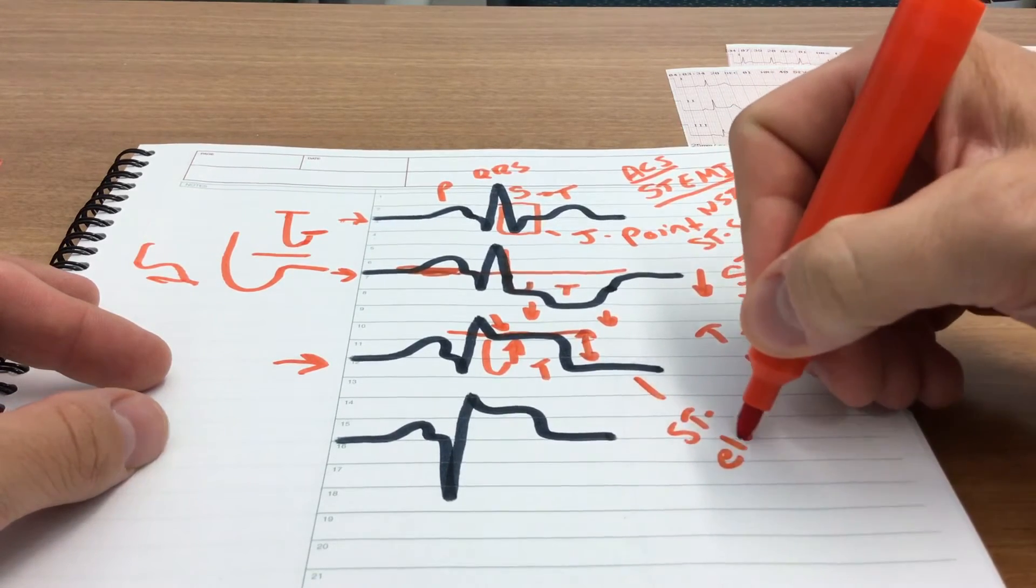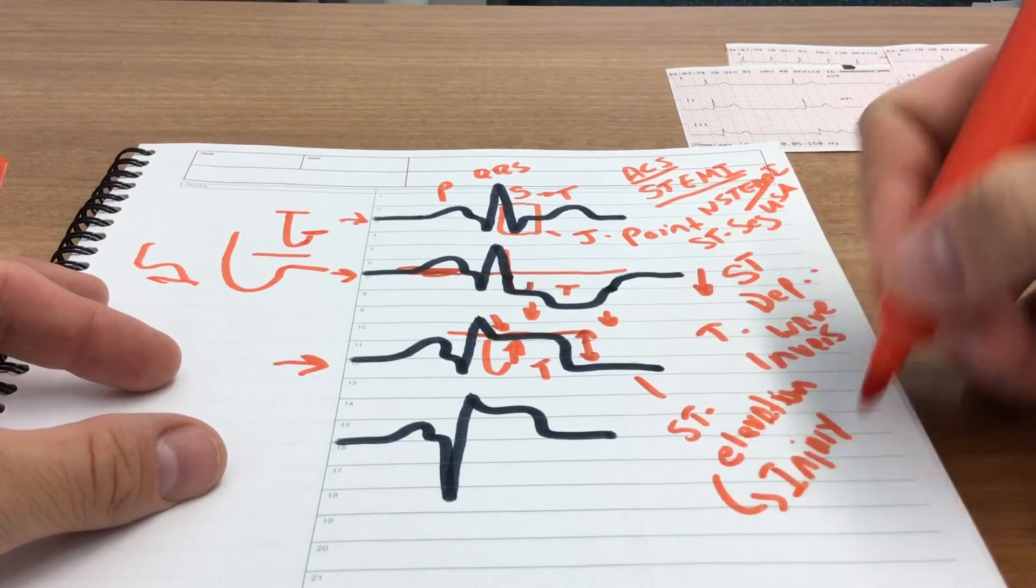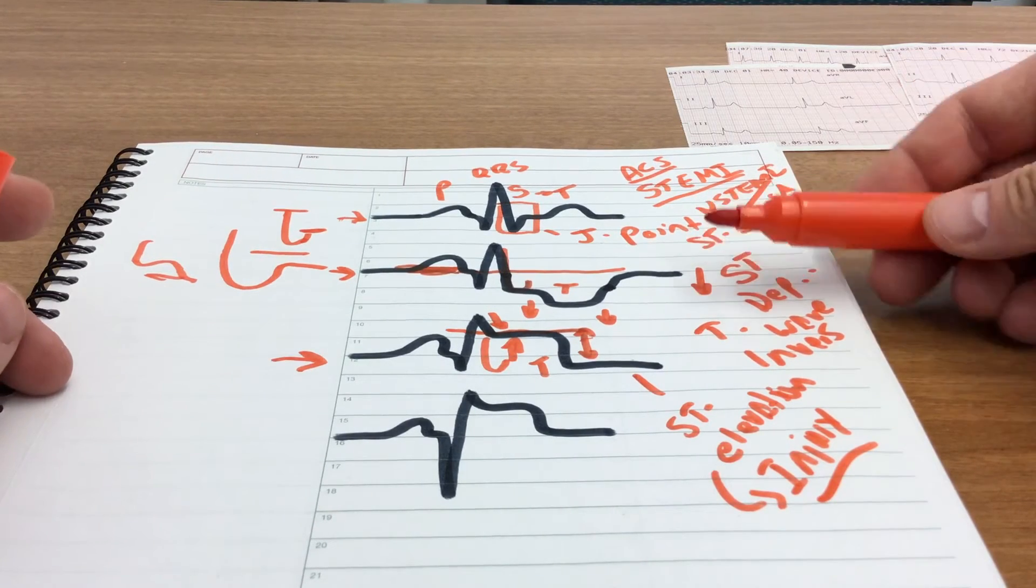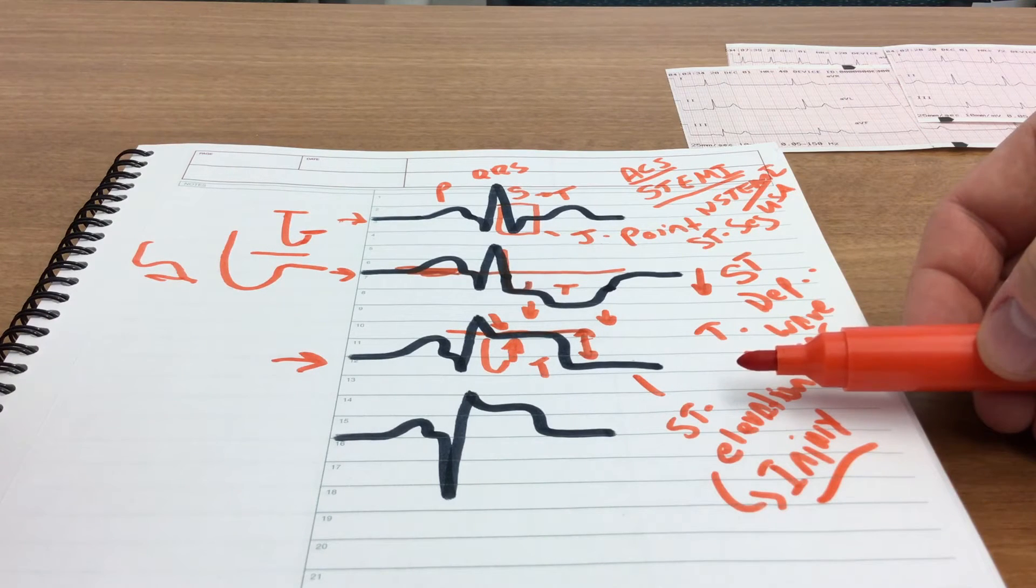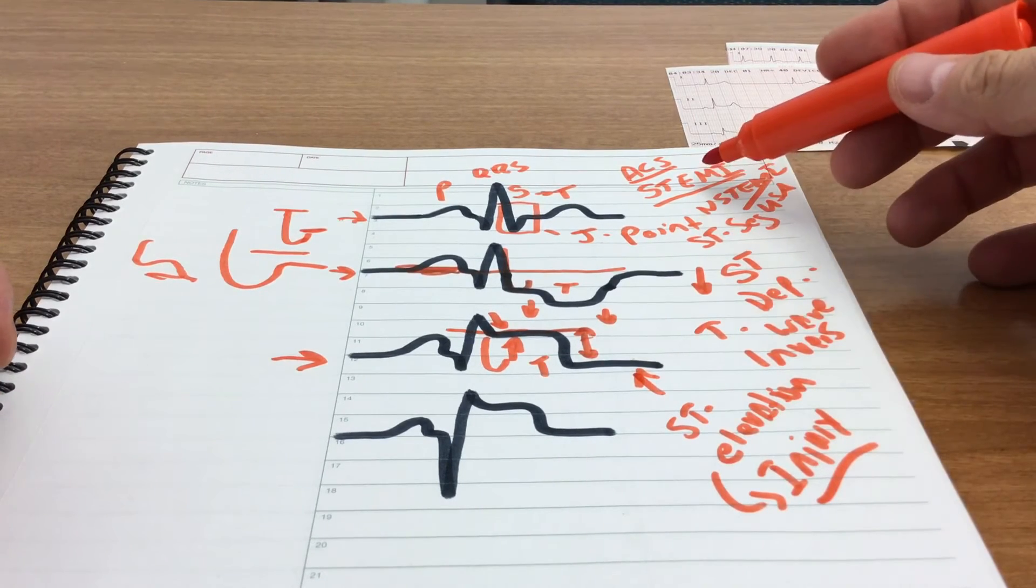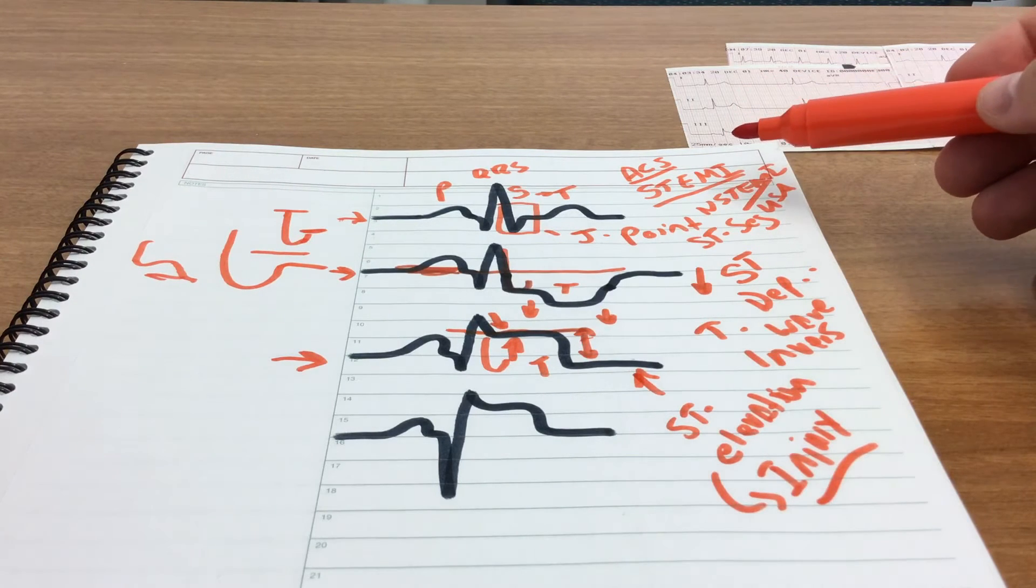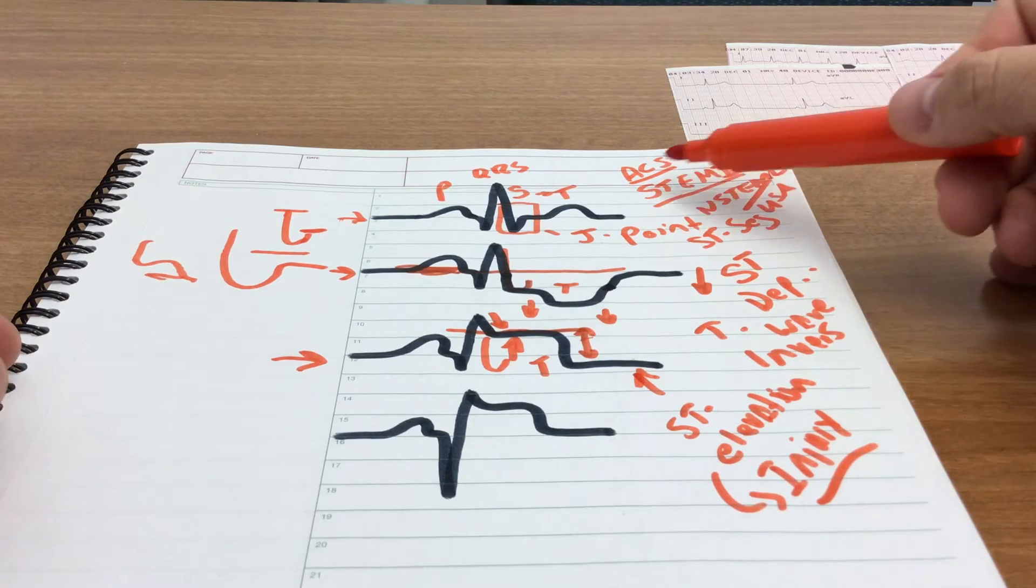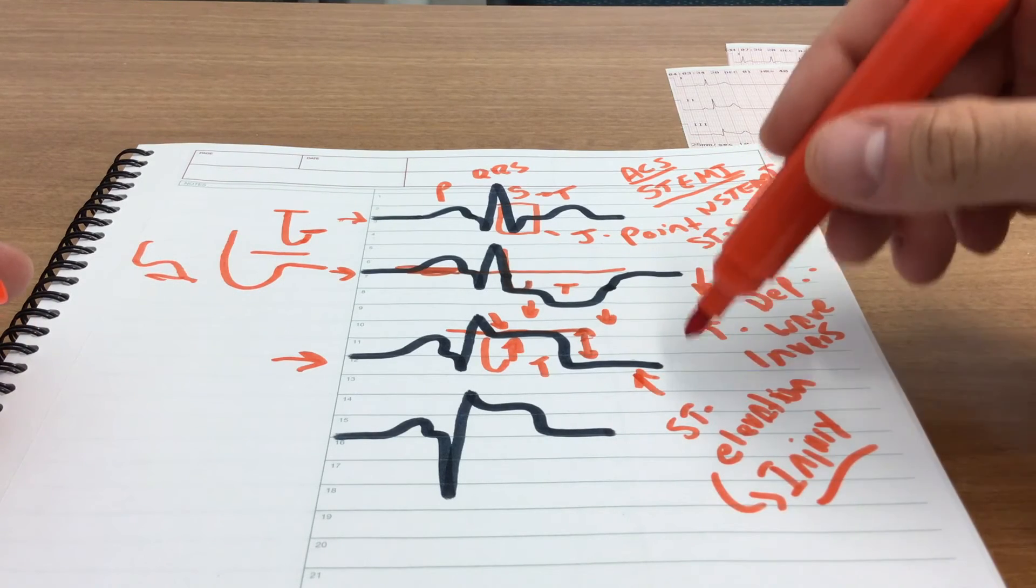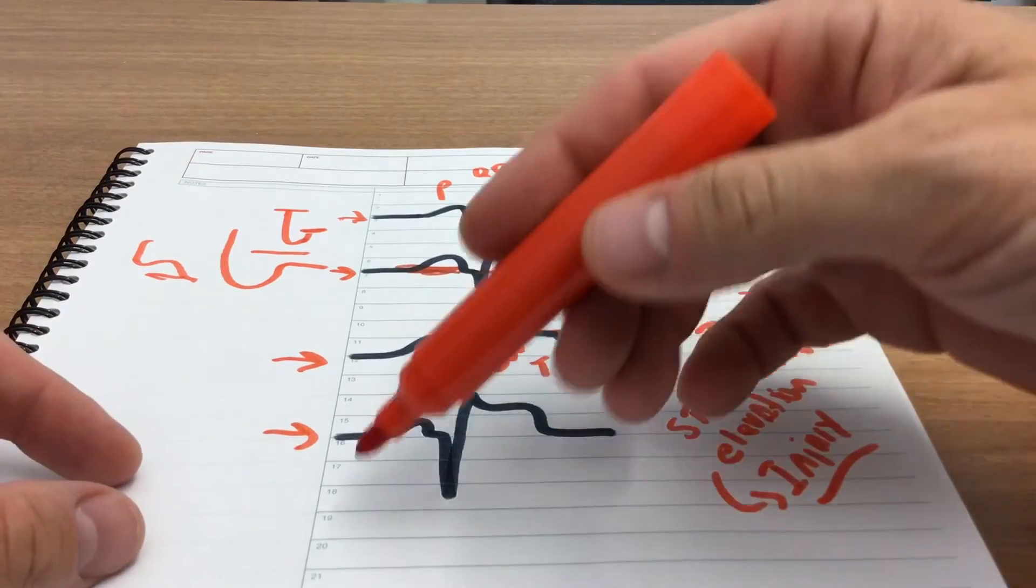This is a phenomenon known as ST segment elevation, and this is a classic indicator for injury. We have active injury occurring. So up here this indicates ischemia and potentially injury in some cases, whereas the ST segment elevation often indicates ongoing active injury to the myocardium. Hence the term STEMI, ST elevation myocardial infarction. That is a heart attack, an infarction. Infarction means to die. That is damage, death to the heart, that is causing noticeable ST elevation, ST changes on the ECG.